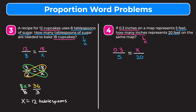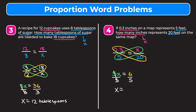We can't simplify the left fraction, so we cross multiply: 5 times x equals 20 times 0.3. To compute 20 times 0.3 mentally, do 20 times 3 equals 60, then move the decimal one place left to get 6. So 5x = 6. Dividing both sides by 5 gives x = 6/5, which is 1 and one fifth. Since one fifth equals 0.2, x = 1.2 inches.